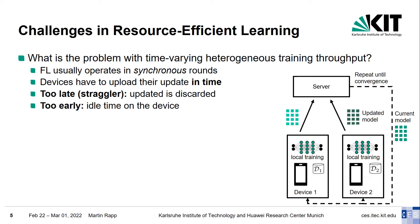But what is the problem with time-varying heterogeneous resource availability? Federated learning usually operates in synchronous rounds. While there are approaches that employ asynchronous coordination, they tend to suffer from instabilities in the learning. In synchronous federated learning, devices have to upload their update in time — before the round ends. If the local training on a device takes too long and the device uploads its update too late, the server has already started the next round and the update needs to be discarded, wasting the spent computational resources. On the other hand, a device that finishes training too early needs to wait until the next round begins, which also wastes available resources.